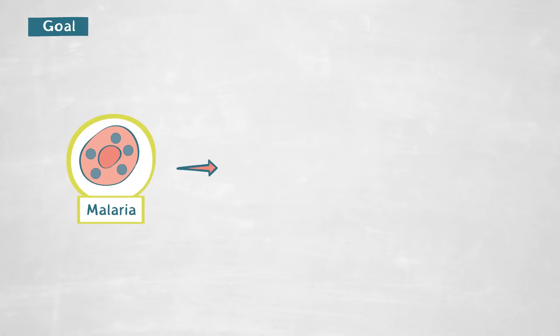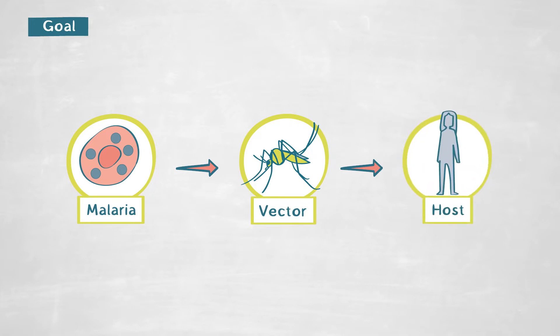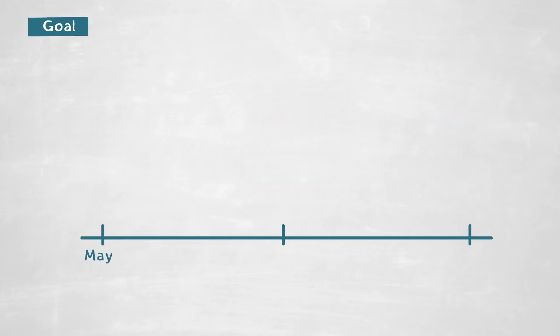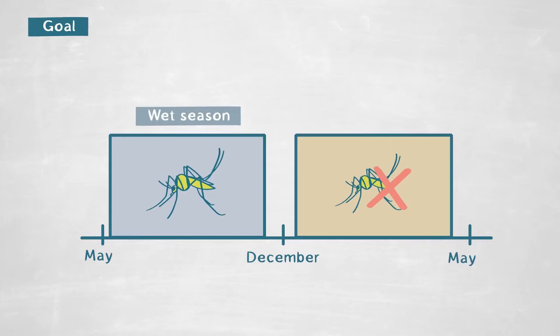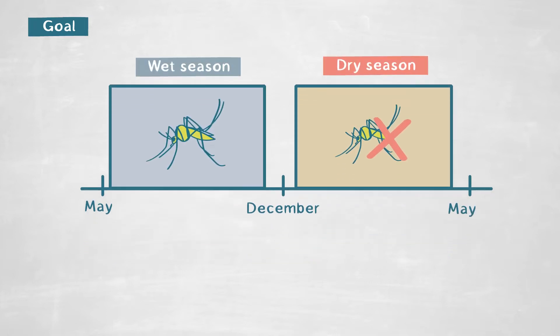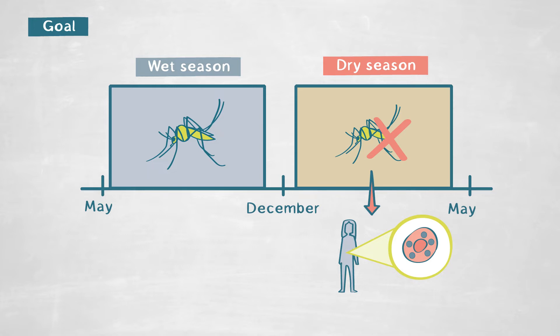Malaria absolutely needs for its transmission the presence of mosquito vectors that transmit the parasite from one person to the next. But in these regions, very often it can happen that there's a dry season that is long enough to interrupt transmission. During these times, the parasite is forced to survive within a host for several months, waiting for the return of the mosquitoes in the ensuing wet season.